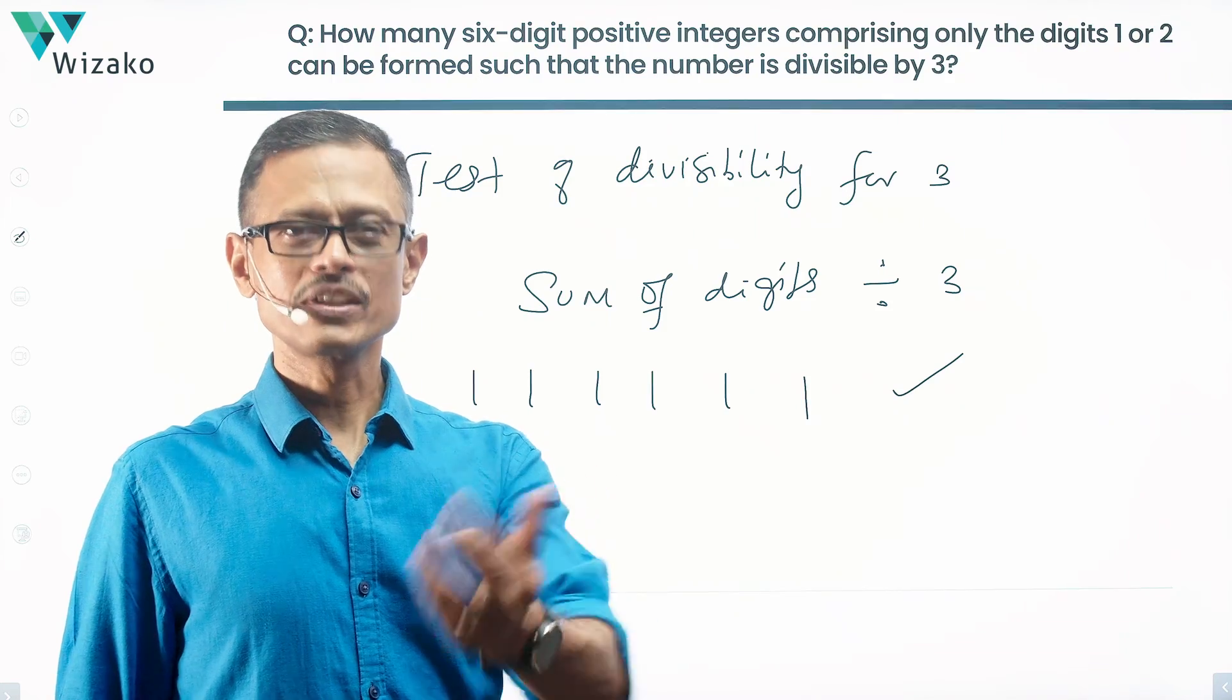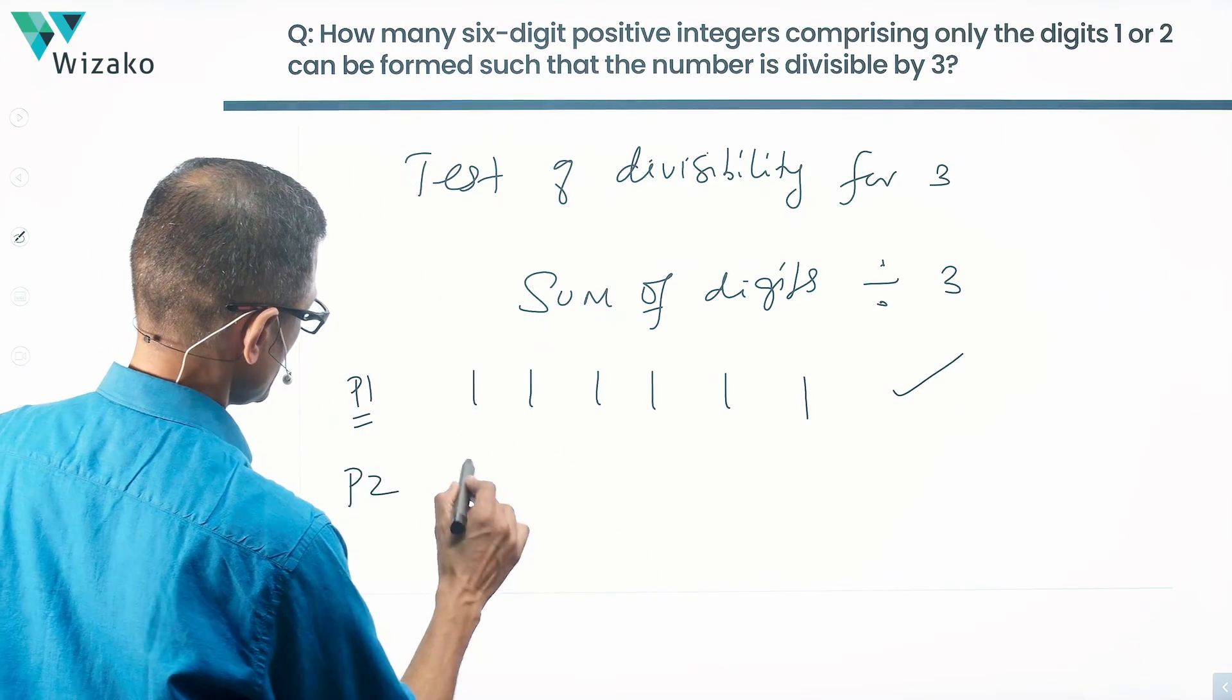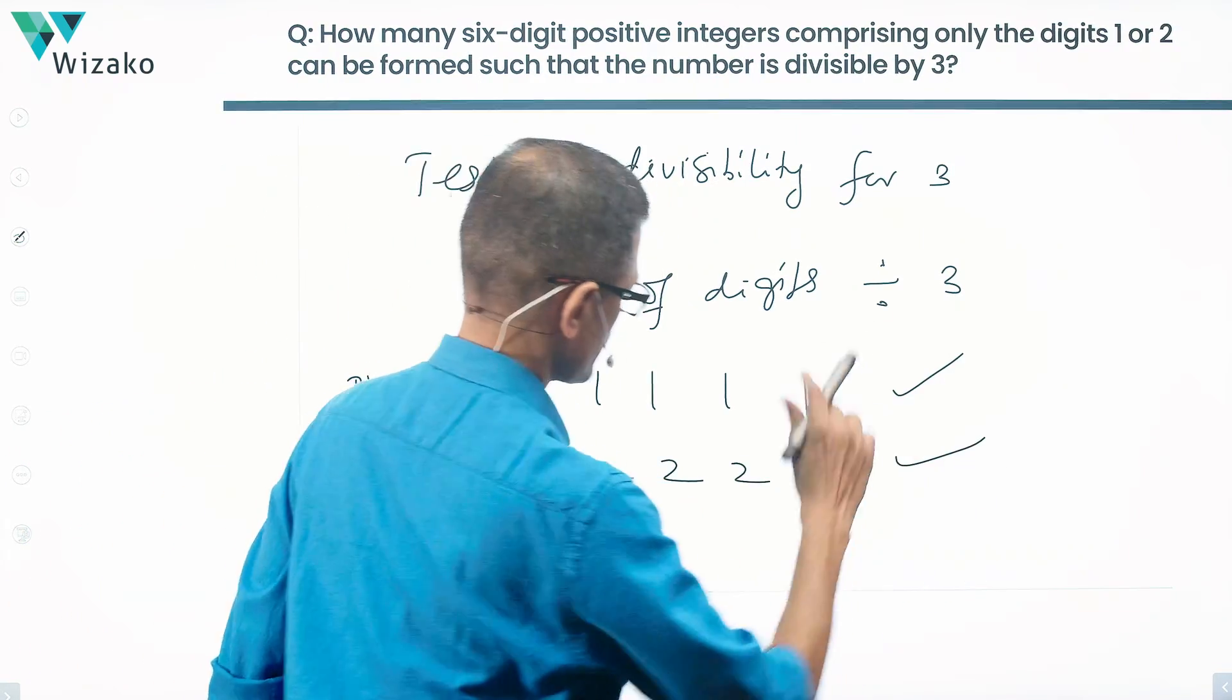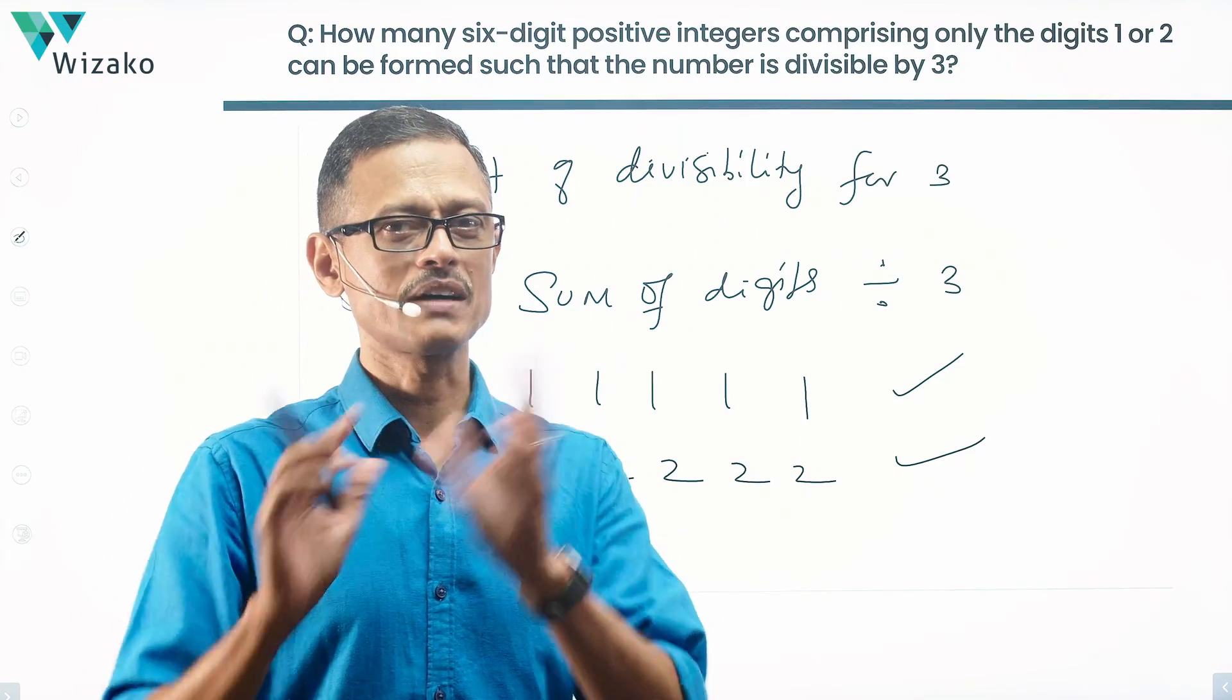If all of them are basically 2s, it will still work because 6 times 2 is 12, therefore it will work. So possibility 2 is 2, 2, 2, 2, 2, 2. The sum of the digits is 12, which is divisible by 3, so this number is divisible by 3. So both of these pass the muster.